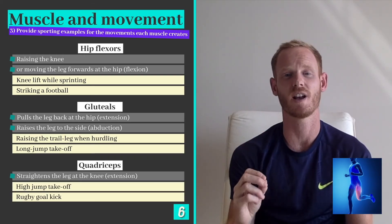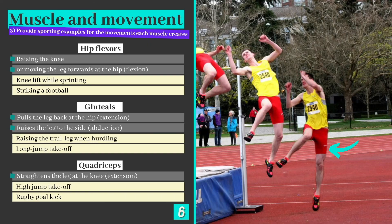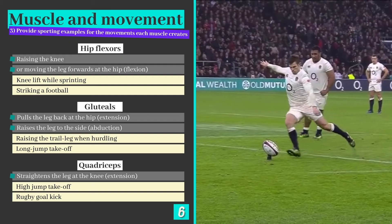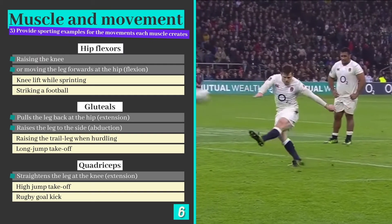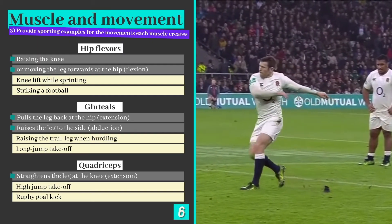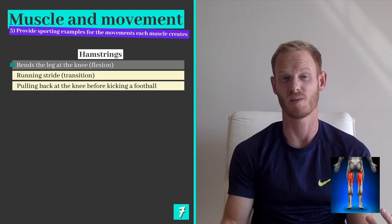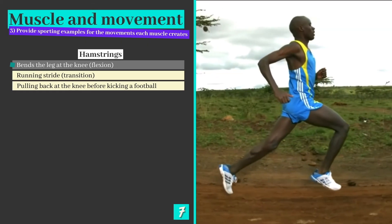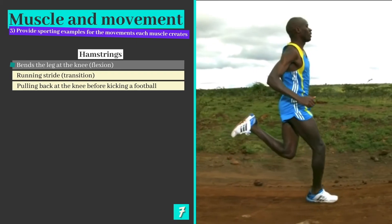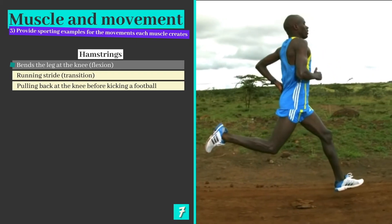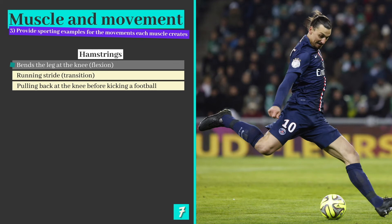The quadriceps straighten or extend the leg at the knee and therefore have a major role to play in jumping, running and kicking. The quads assist in propelling the high jumper into the air and allow the rugby player to generate distance when kicking at goal. While the quads extend the leg, the hamstrings produce flexion, pulling the lower leg backwards at the knee. This occurs during the running stride when transitioning from the push-off to the heel-strike phase, and when drawing the leg backwards in preparation to strike a football.